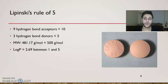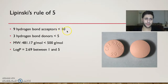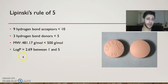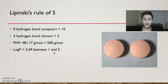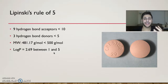Lipinski's rule of 5 shows if a drug can be taken orally, and you can see that Crestor fulfills all of these rules: less than 10 hydrogen bond acceptors, less than 5 hydrogen bond donors, a molecular weight less than 500 grams per mole, and a log P value less than 5. It's called Lipinski's rule of 5 because these are multiples of 5 — and it's just a rule of thumb, so it doesn't always need to be right.